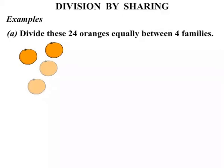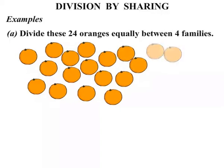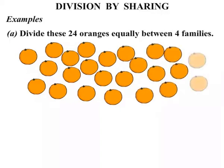2, 4, 6, 8, 10, 12, 14, 16, 18, 20, 22, 24. So there's the 24 oranges.